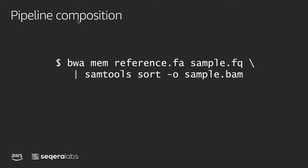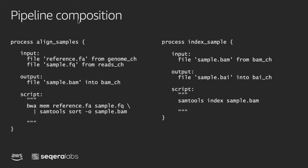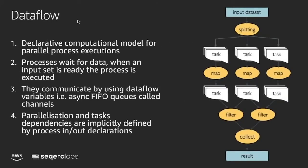We want to keep the same fluidity that's available to people using Unix tools, and you simply wrap that in a process. So we take BWA-MEM, and the output of the first process — in this case the BAM channel — becomes the input of the index sample channel. It's an implicit linking of the processes together, which provides the Dataflow approach. In this Dataflow programming model, each task is sitting there waiting, and as soon as an element comes into the input channel, it triggers an execution. These channels are asynchronous first-in, first-out queues, and it's the links between processes via channels that define the execution.